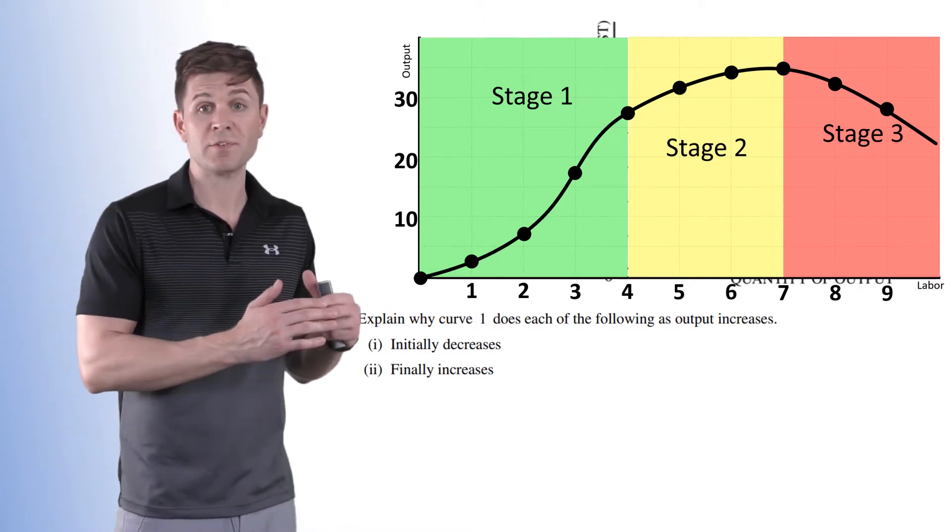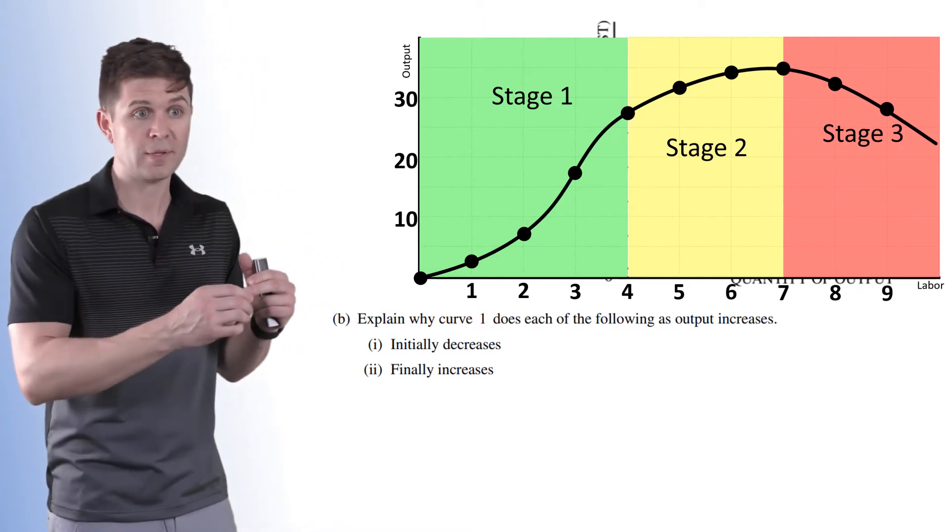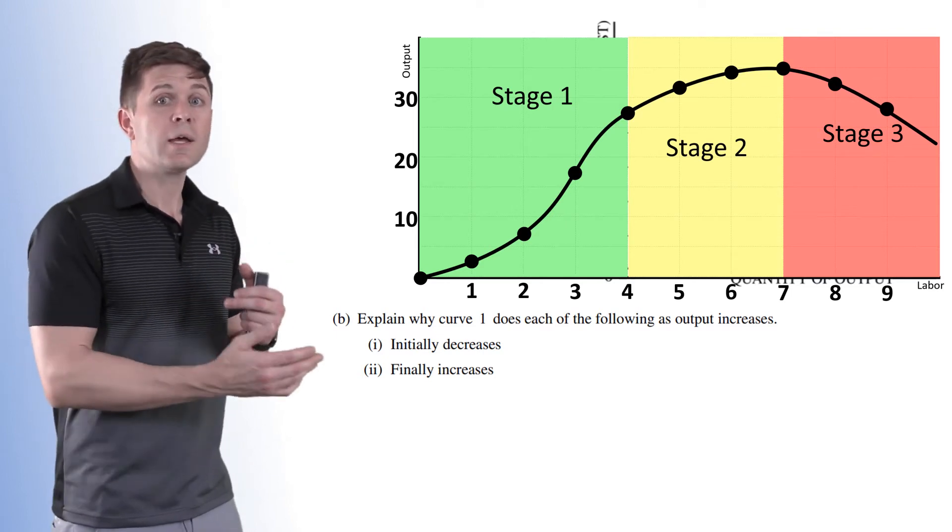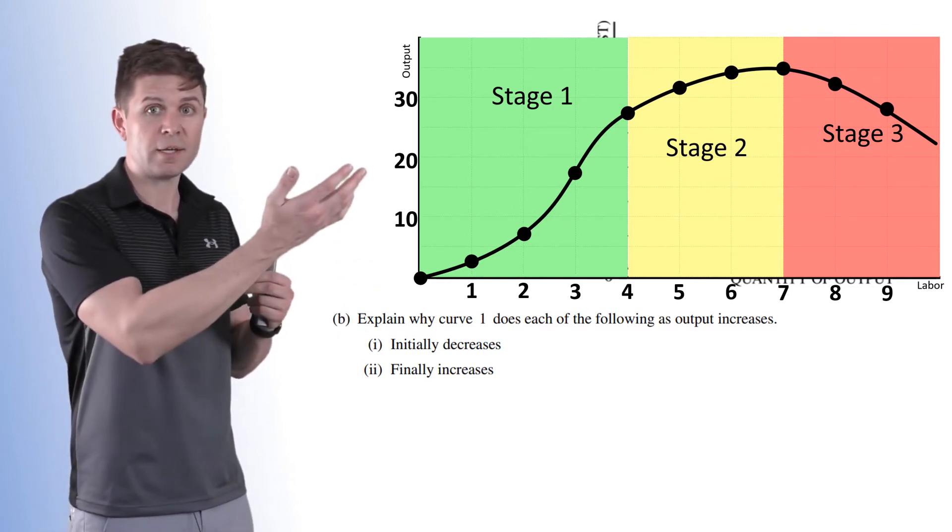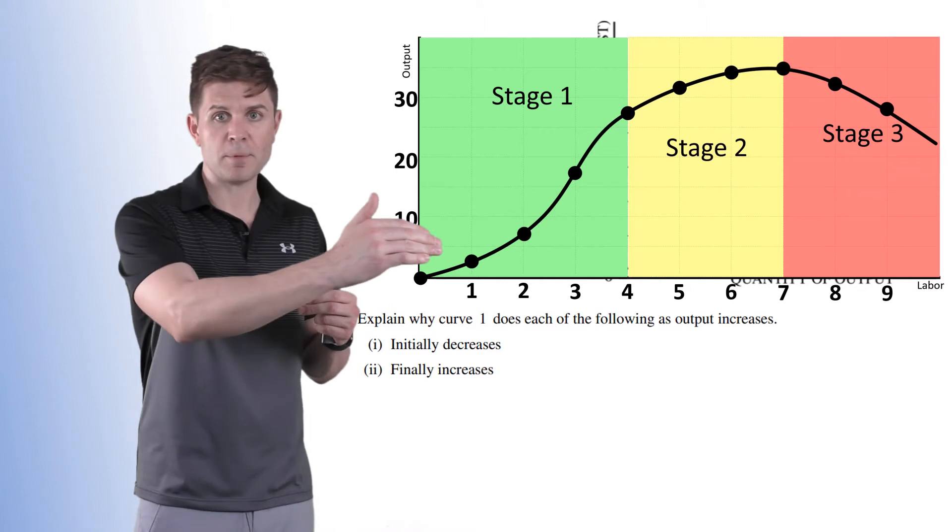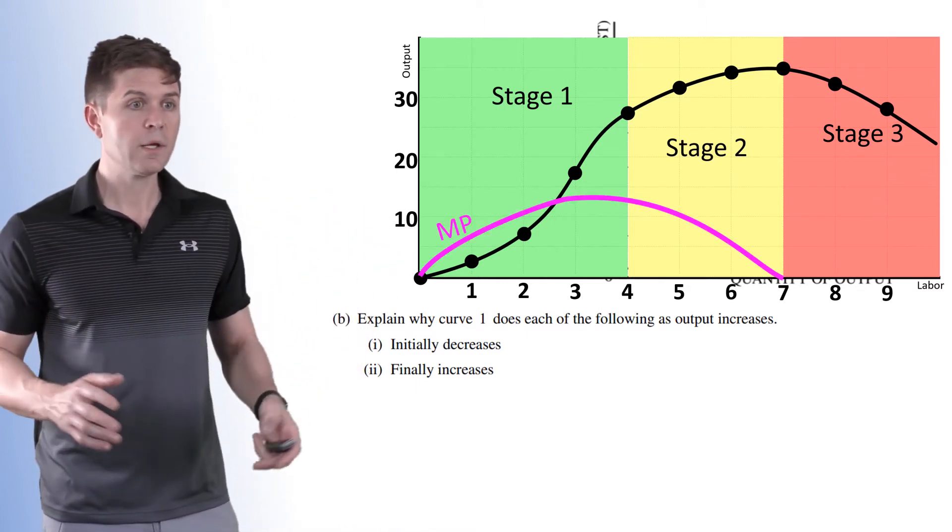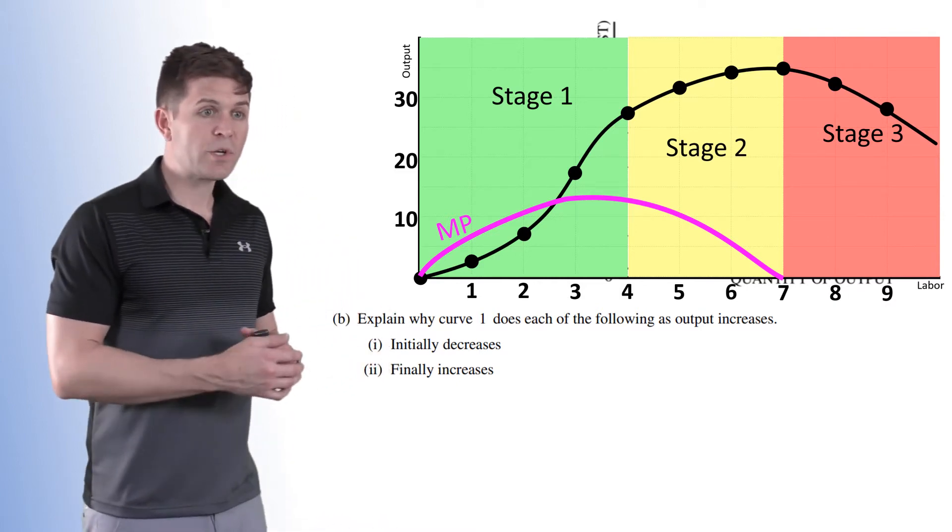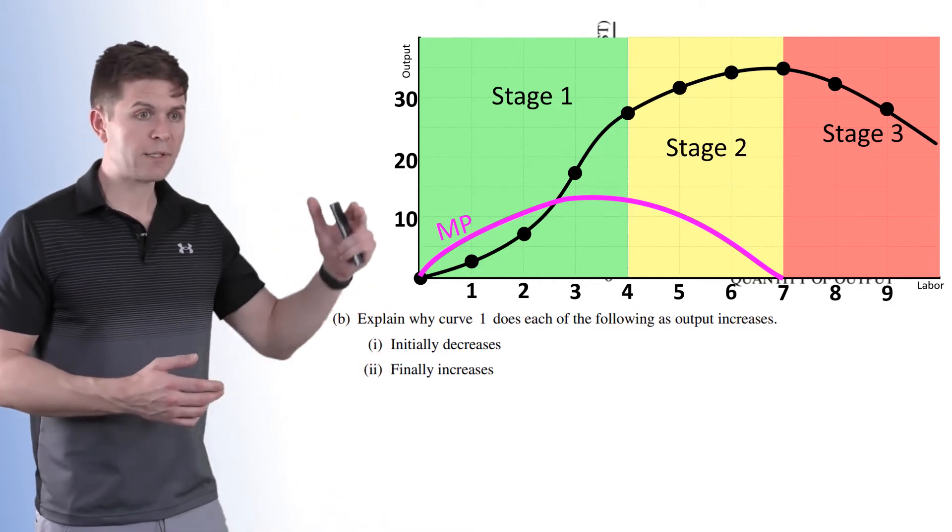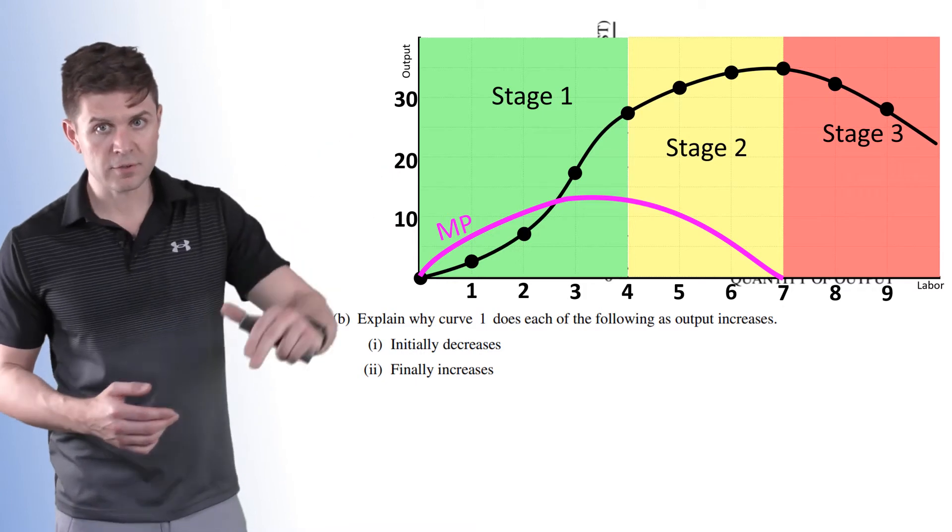Stage one and stage two is what we're looking at here, and we know that total product in stage one is increasing at an increasing rate. And then as soon as we get to stage two, total product is still increasing, it's just increasing at a diminishing rate. This all has to do with what marginal product is doing. Here's our marginal product curve. We know that it goes up in the beginning, our marginal product increases, and then starts to diminish.